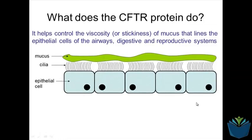Cystic fibrosis is associated with a very thick, sticky mucus buildup found within areas like the respiratory system, also the digestive system, and in some cases the reproductive system as well.